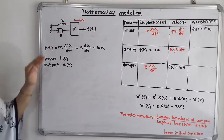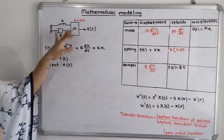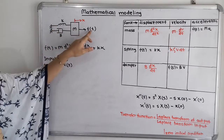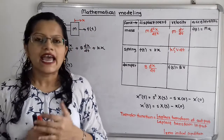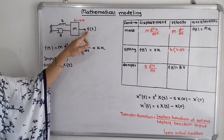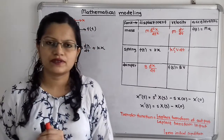Here is the spring, mass, and damper system. f(t) is the applied force and there is a displacement x in the direction of the applied force.